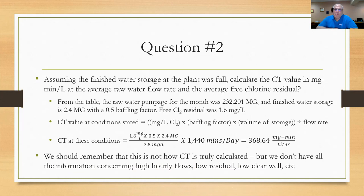You can see how I laid this out here. I went into the table and I saw that the raw water pump is for the month 232.201 million gallons. The finished water storage was 2.4 million gallons and has a baffling factor of 0.5. The free chlorine residual, and that's what I use for CT, not total but free, was 1.6 milligrams per liter. So the CT value at these conditions would be the milligrams per liter chlorine times the baffling factor, times the volume of storage divided by the flow rate. For those not too familiar with CT value, basically what the regulators are doing is having you calculate a detention time, which is always the volume divided by the flow.